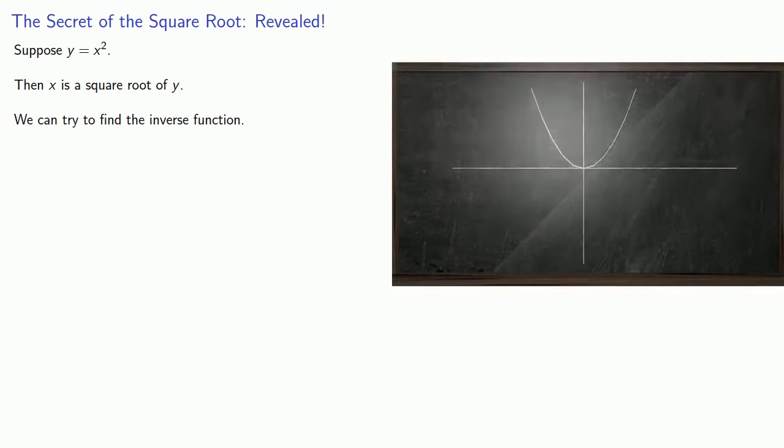Suppose y equals x squared, then by our definition, x is a square root of y. We can try to find the inverse function. And we'll do that by reflecting the graph of y equals x squared across the line y equals x.